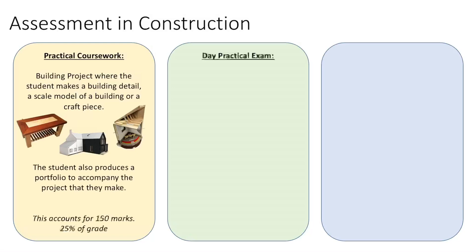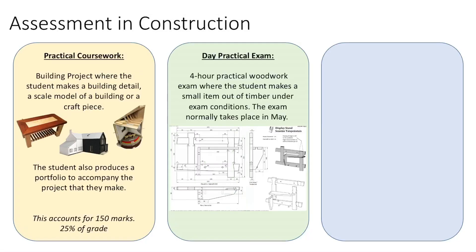The second aspect is a day practical examination. This is a four-hour practical woodwork exam where students make a small item out of timber under exam conditions. The exam normally takes place in May. Students will be given a working drawing similar to the one on screen and told they have four hours to make this piece, given all the pieces and equipment needed, done independently without any help. This accounts for another 150 marks, a further 25% of the exam.